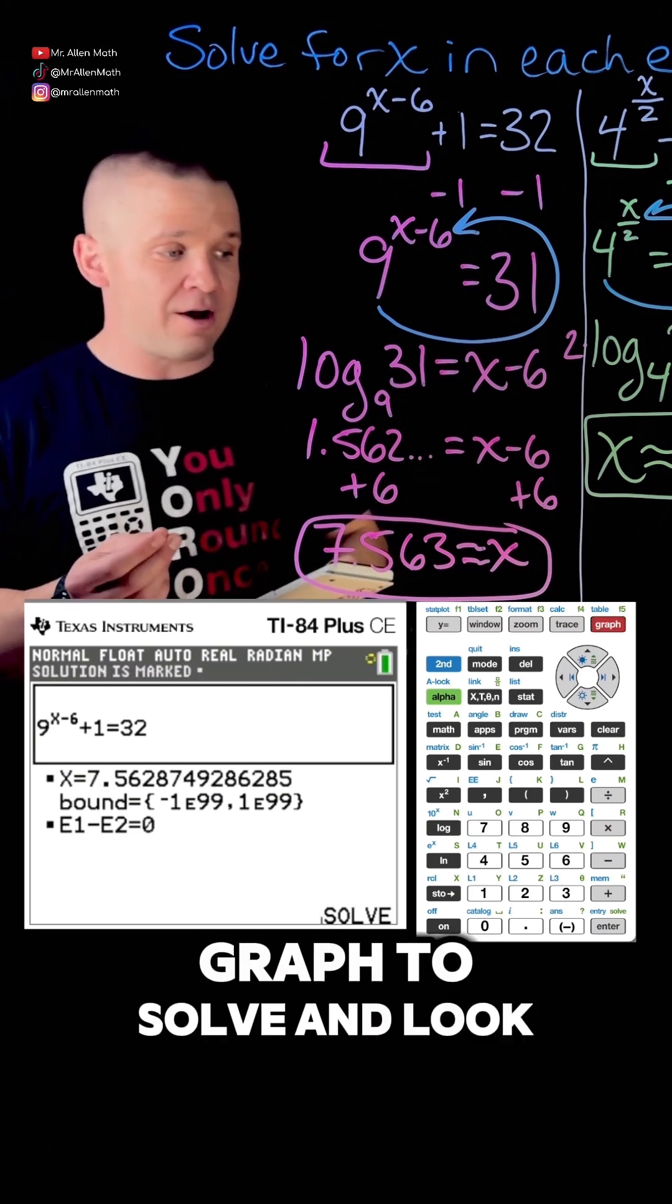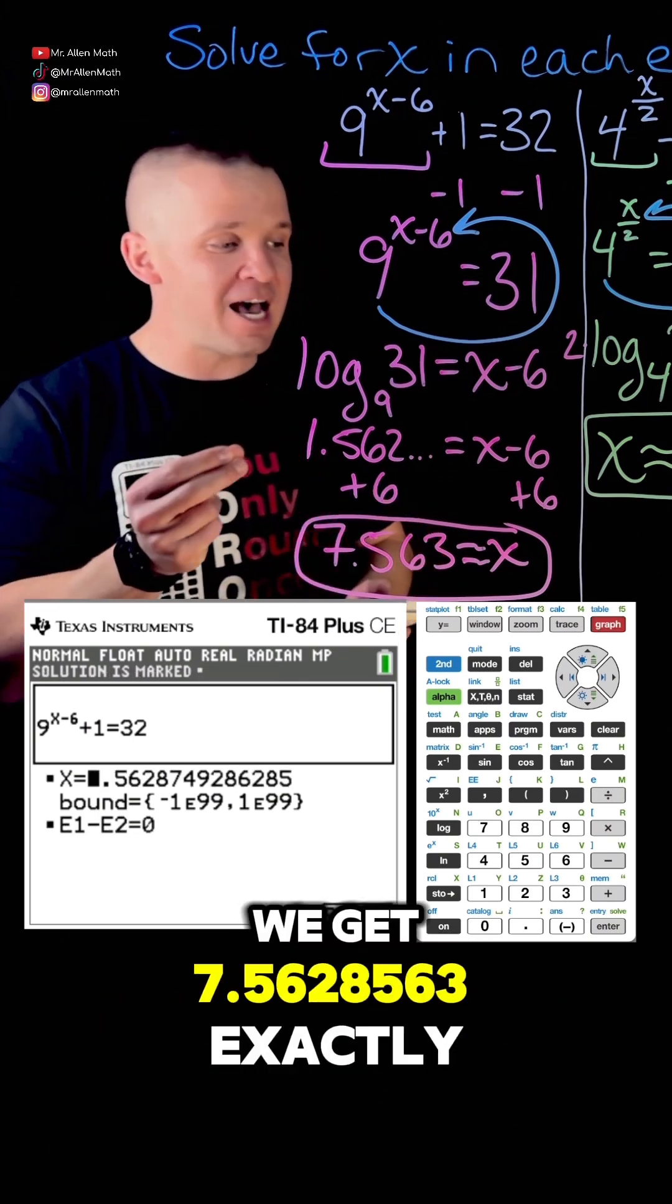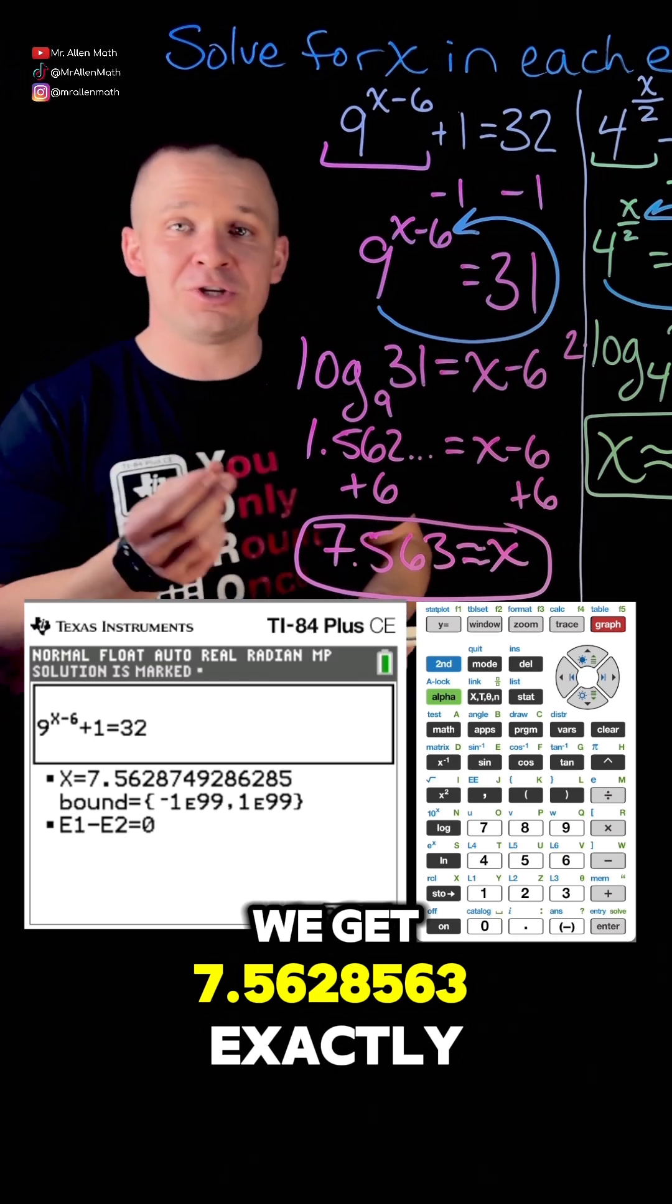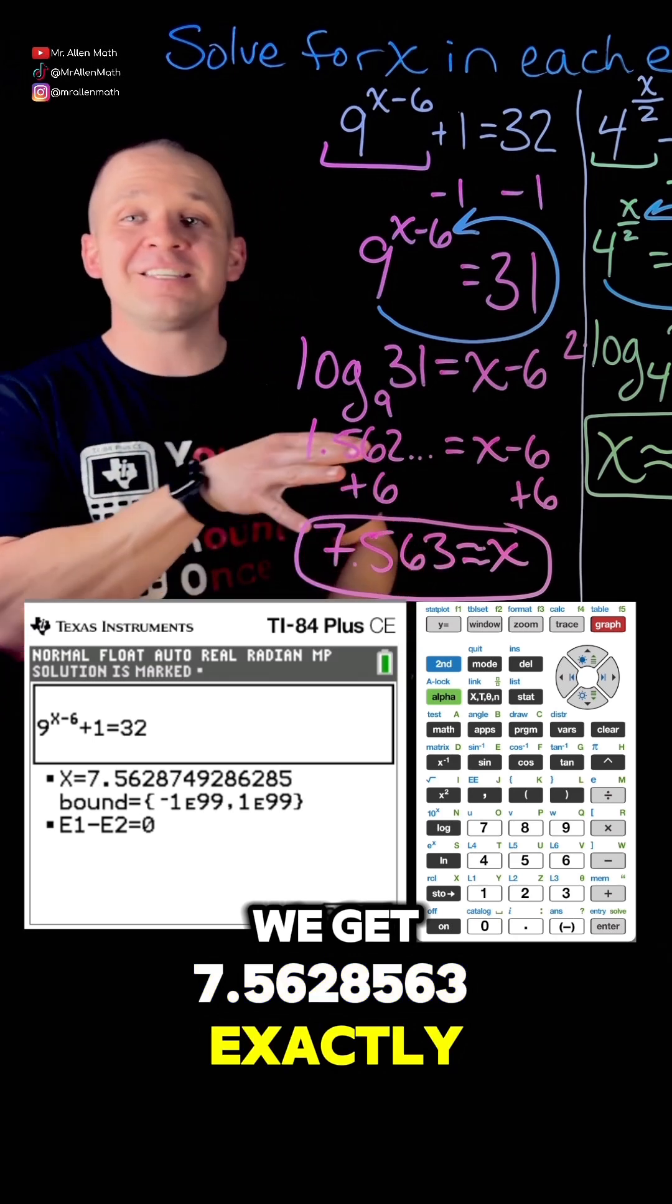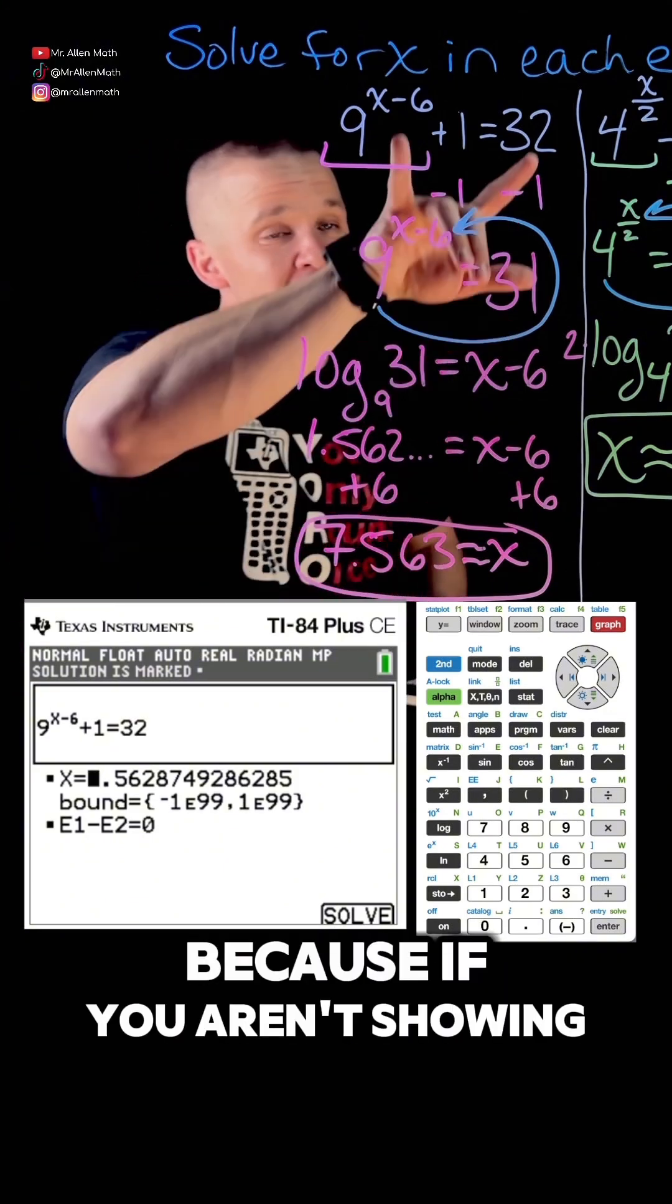And look at that, we get 7.5628563, exactly what we got before. So this is a great way to check your work on a free response, because if you aren't showing work - if you're not showing that work work work work work like Rihanna - you're getting zero points.